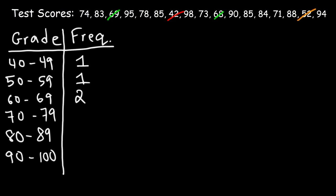Now what about in the 70s? We have 1, 2, 3, 4, so 4 students received a grade between 70 and 79. Now let's move on to the 80s. We have 1, 2, 3, 4, 5. So 5 students scored between 80 and 89.